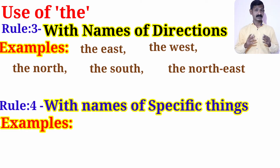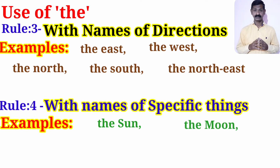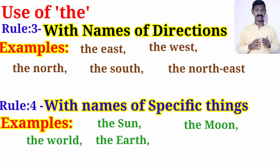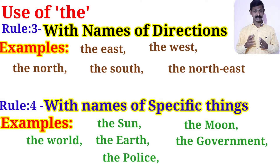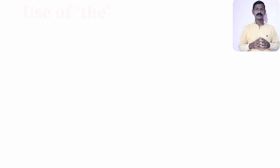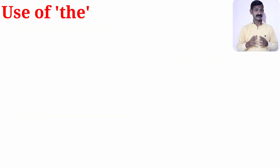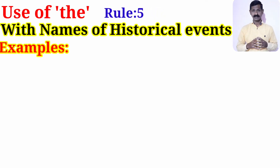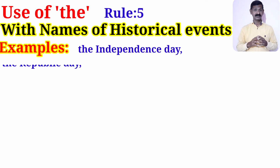The next rule: we use article 'the' with specific things — for example: the sun, the moon, the world, the earth. Similarly, we use 'the' with words like the government and the police.